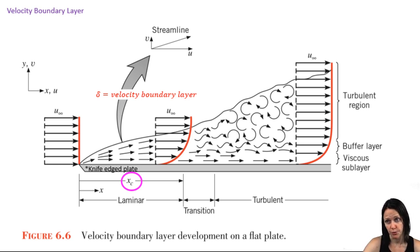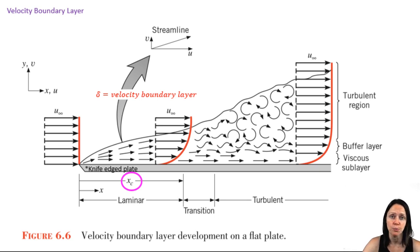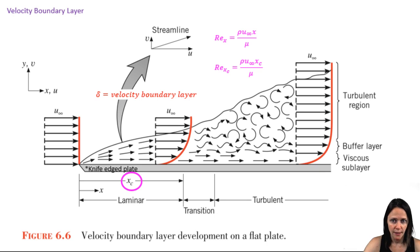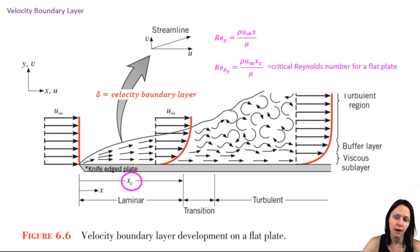The governing equations for flow in that boundary layer are going to be very different depending on whether we have laminar or turbulent flow, so we have to have a way to characterize when that transition takes place. The Xc value is determined from the Reynolds number. The Reynolds number is a dimensionless number, and we have different cutoffs for different geometries regarding what the Reynolds number can be before, at a critical distance from the leading edge, the flow becomes turbulent.